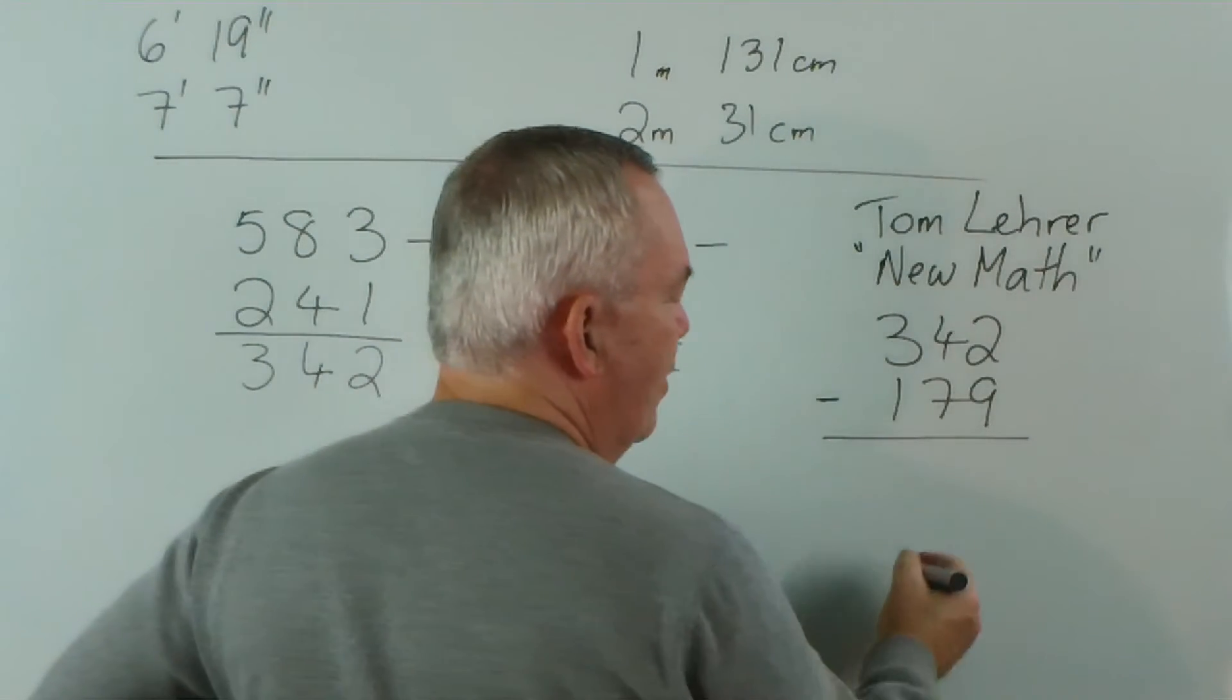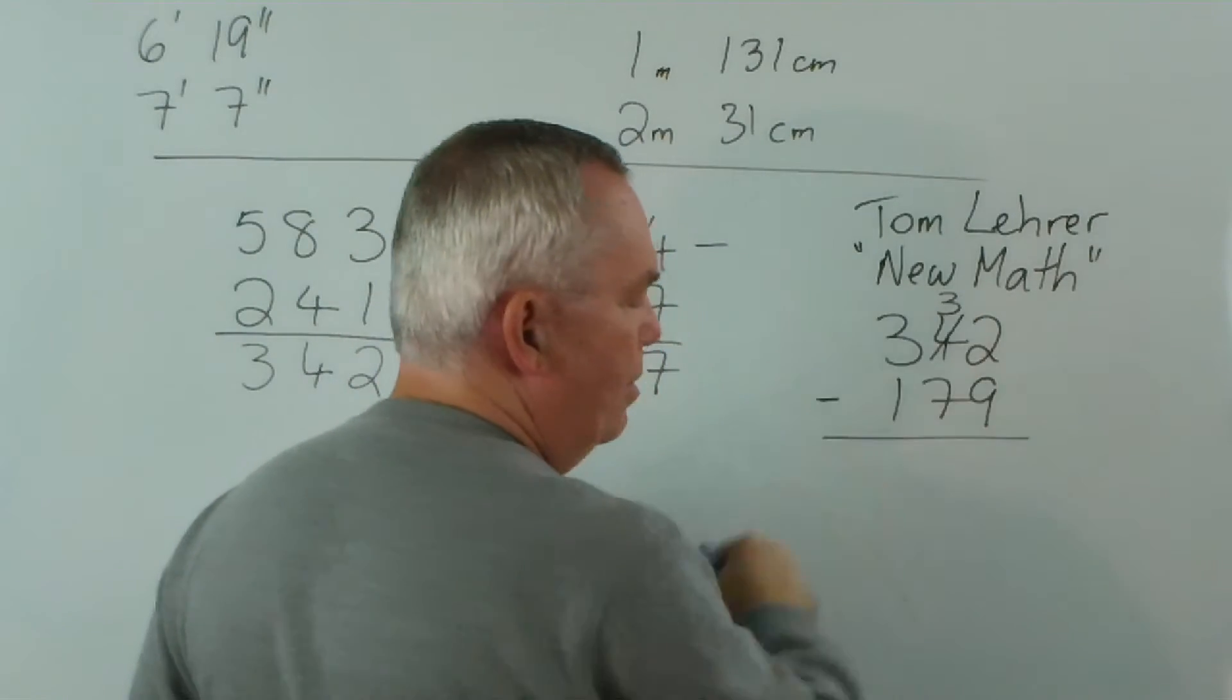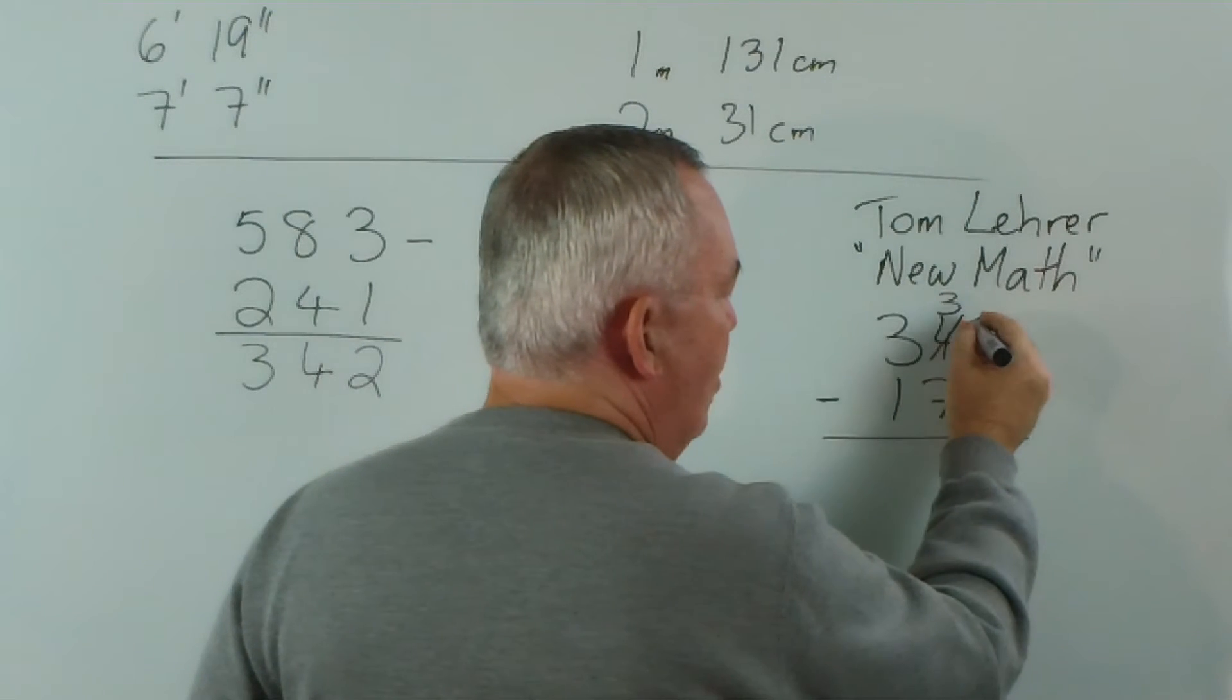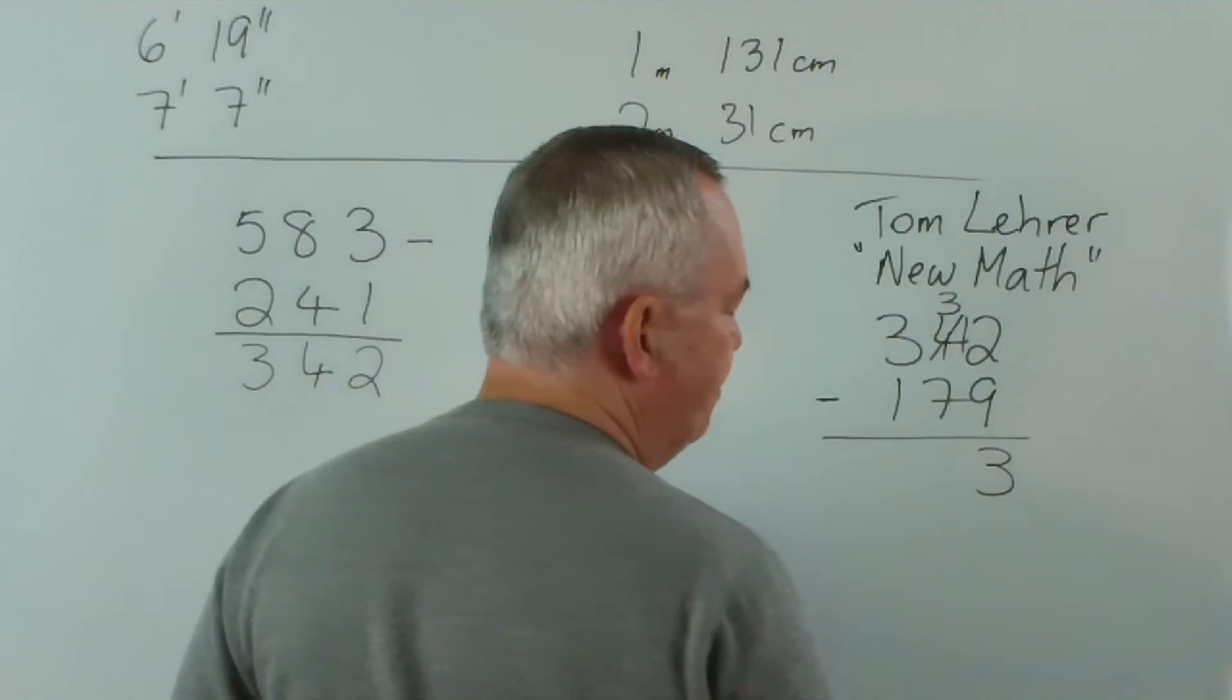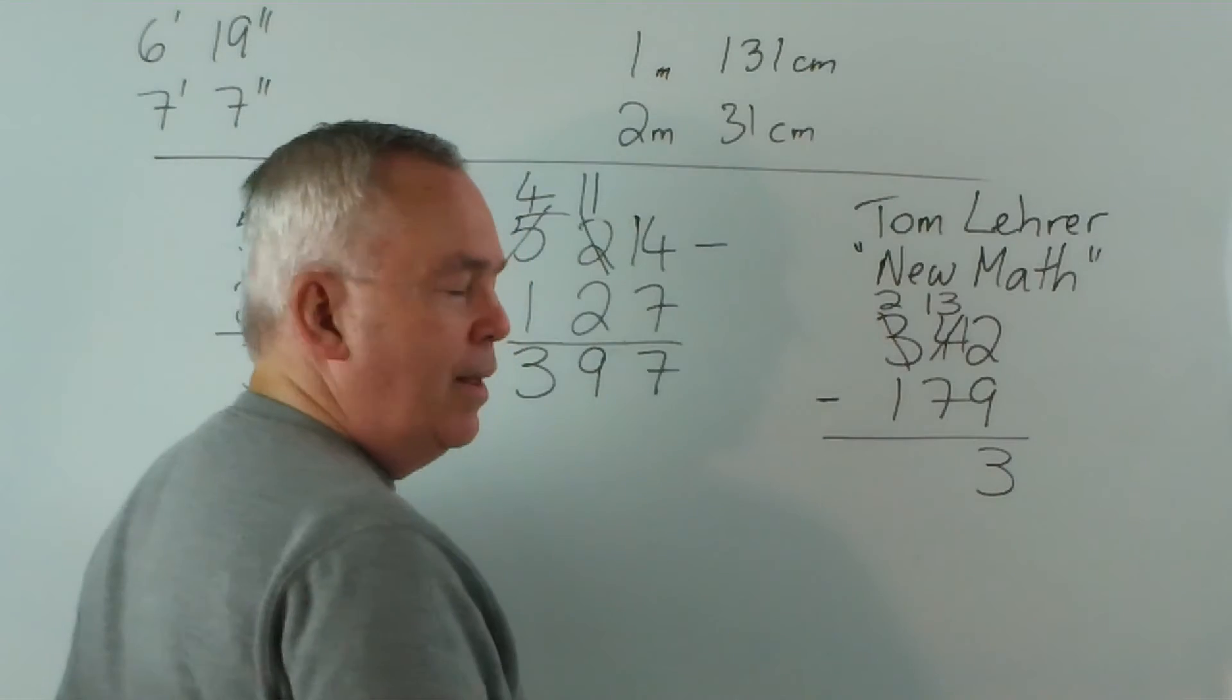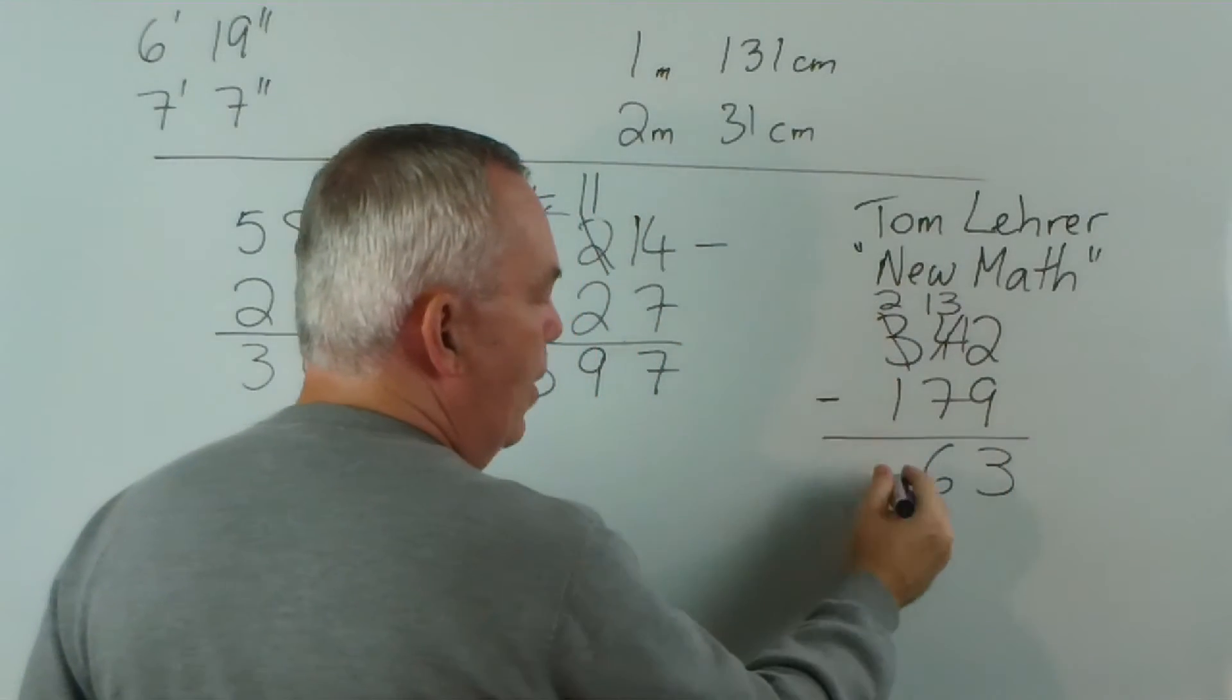9 from 2 we can't do, so we borrow. Notice I write the number above, so I don't try and poke it in between the numbers anywhere. It just gets too untidy. So, we drop the 4 by 1 and we move the 1 across, so we now have 12. 12 take away 9 is 3. 7 from 3 we can't do, so we drop this by 1 and carry 1 bundle of 10 across, so we now have 13. 13 take away 7 is 6 and 2 take away 1 is 1.